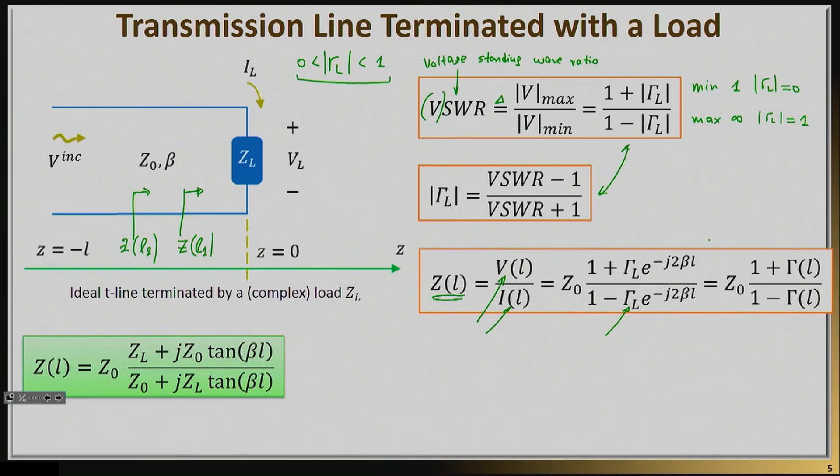Now this gamma L, which we found before, which as a reminder is (ZL - Z0)/(ZL + Z0), so this gamma L multiplied by this exponential e^(-j2βL), a lot of times will be called the reflection coefficient at the line, at any single location of the line, gamma as a function of L. This is what you will basically see on this equation right here, and similarly I have exactly the same thing in my denominator.